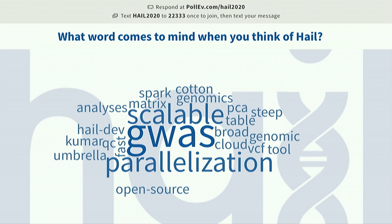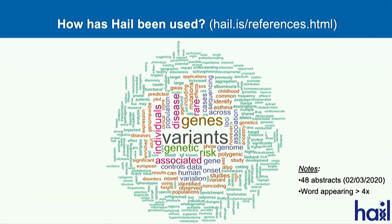Cloud tools — I love this. The major words coming up are GWAS, scalable, and parallelization, which is really what we strive towards. To extend what your word cloud generated, this next word cloud shows all 58 abstracts that have cited Hail so far in their publications.